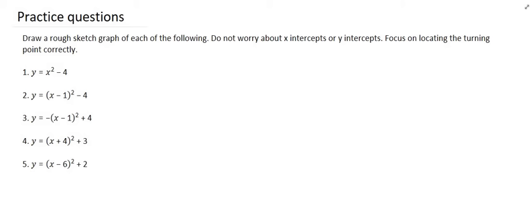We'll start with number one. Number one is definitely a parabola because it's got x squared — the x is not the exponent. It's a happy parabola because the number in the front is not negative. And then this minus four, because it's not in brackets with the x, means it's not a horizontal shift — it's a vertical shift. So it's moved four units down. That graph would look as follows.